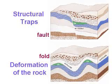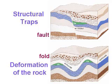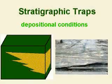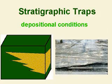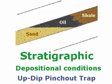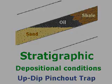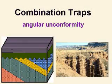Structural traps are caused by deformation — something big, like an earthquake or moving plates, that has changed the rocks. Stratigraphic traps are caused by irregularities in the deposition of the layers when they were laid down. Combination traps, commonly known as angular unconformity traps, are composed of rock formations created from both deformation and deposition.